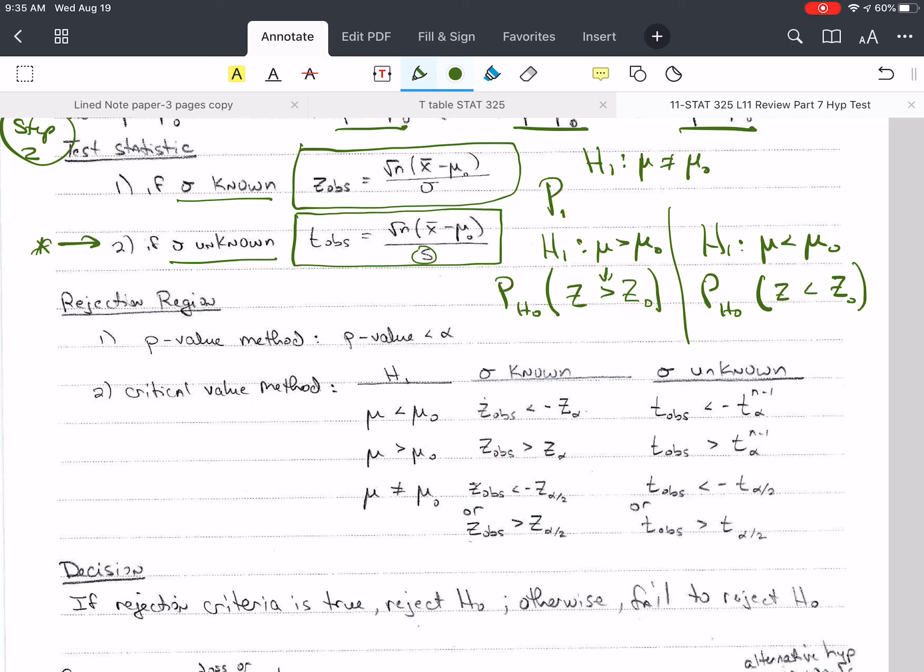then we have the probability under H-naught that Z is greater than the absolute value of Z-naught, which is equal to the probability that Z is less than negative Z-naught, plus the probability that Z is greater than Z-naught, assuming Z-naught's positive here.